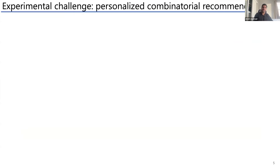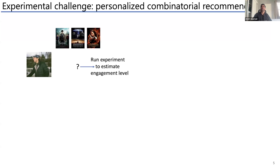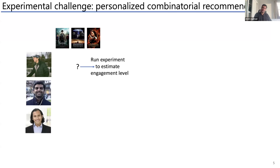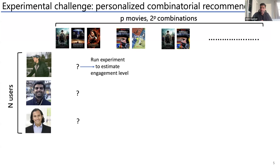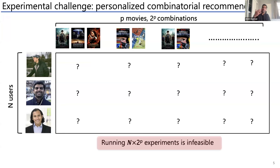To make this concrete: imagine the movie setting. You want to know what would happen to a user under a combination of movies — you could run an experiment by forcing Netflix to show them that combination. With n users and p movies, the total number of combinations is 2^p. Learning outcomes for every user under all 2^p combinations becomes infeasible because of the exponential dependence. Can we design a data-efficient experiment to recover all n × 2^p outcomes?